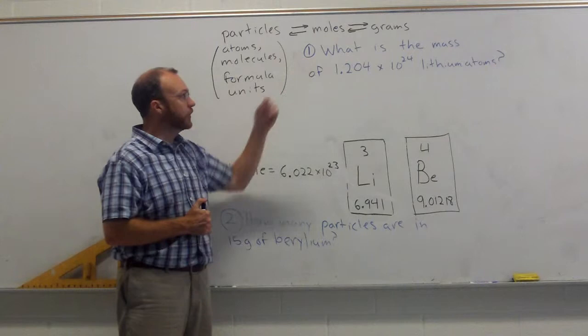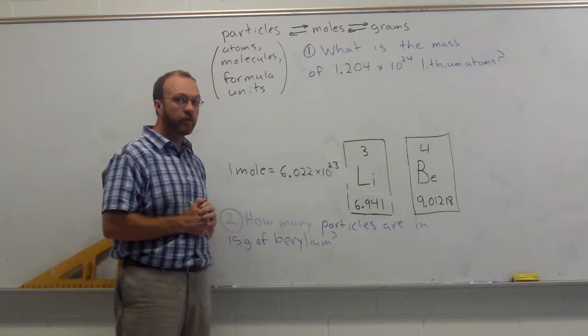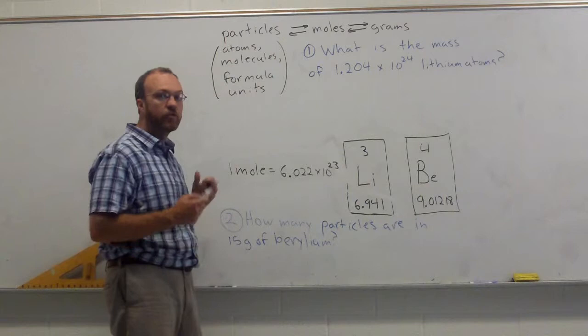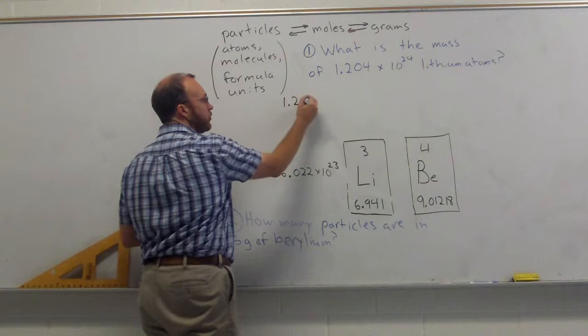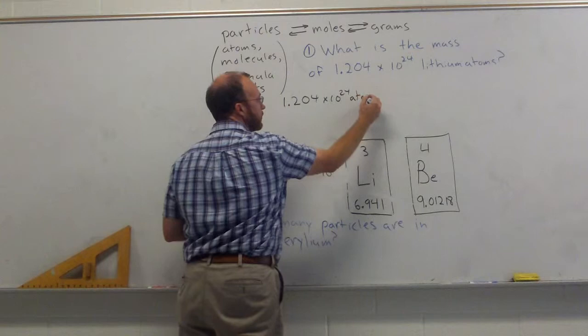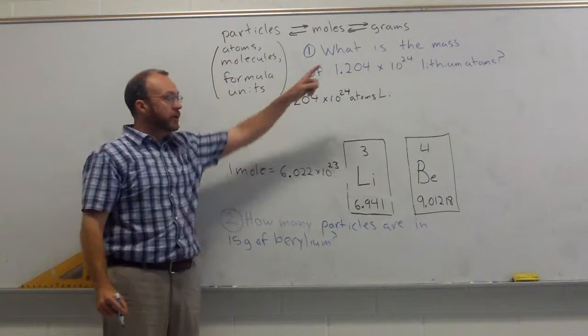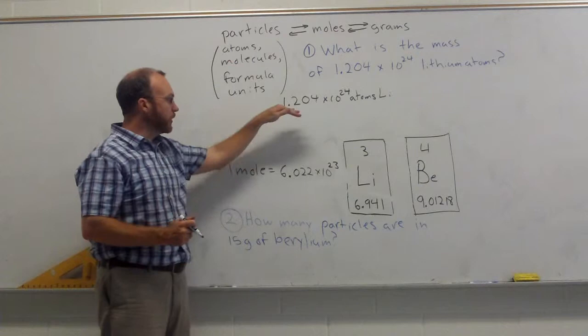So in the first one here, it says, what is the mass of 1.204 times 10 to the 24th lithium atoms? Like all of these problems, we start with what is given to us, with the number that we know. So I'm going to start with 1.204 times 10 to the 24th atoms of lithium. Now, it's saying, what is the mass, so I want grams.